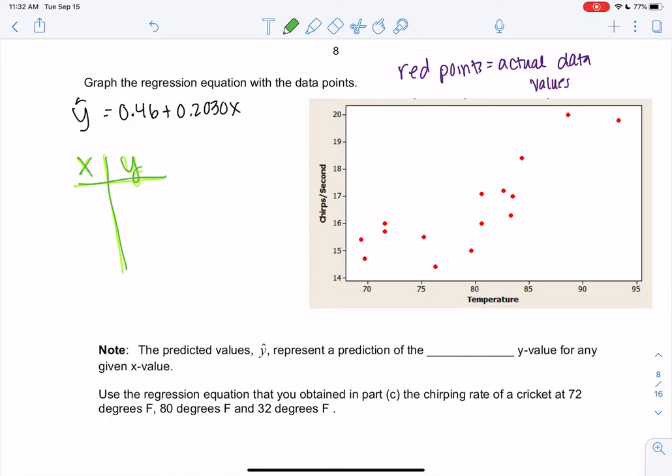So we can pick any x we want. I probably wouldn't pick 60 because it's not on the graph, but maybe we could pick like 75 and 90. I'd like to spread it out—it makes the line easier to draw. So we'll plug in 75 and 90 so that we can graph the line.